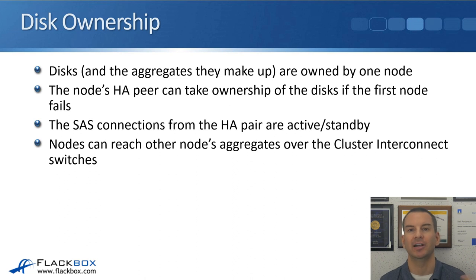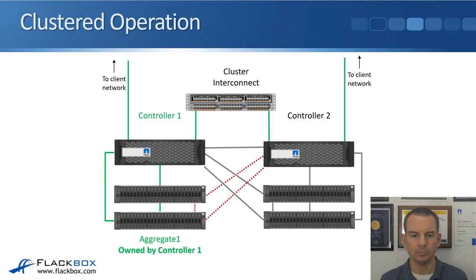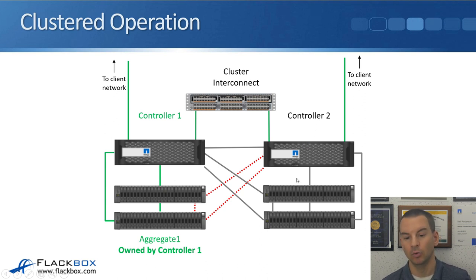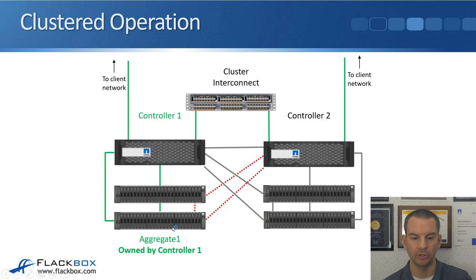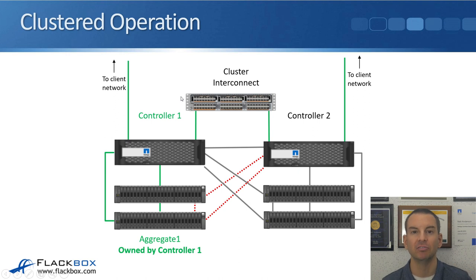This is going to be easier to understand with a diagram. In our example, I have a two-node cluster with controller 1 on the left and its disks on the left, and controller 2 on the right with its disks on the right. We're going to be talking about aggregate 1, which is owned by controller 1, on the bottom disk shelf. Both controllers are connected to the cluster network and to a data network used for incoming client connections.